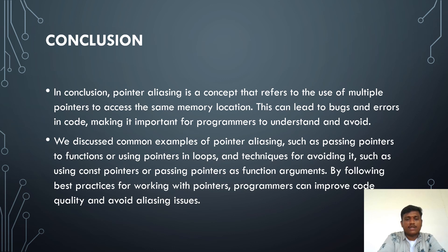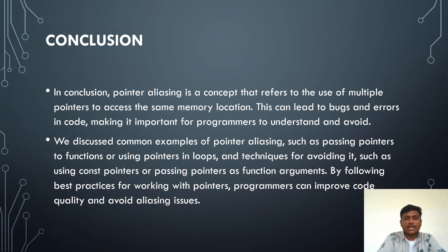We discussed common examples of pointer aliasing such as passing pointers to functions and using pointers in loops, and techniques for avoiding it such as using const pointers or passing pointers as function arguments. By following best practices for working with pointers, programs can have improved code quality and avoid aliasing issues.